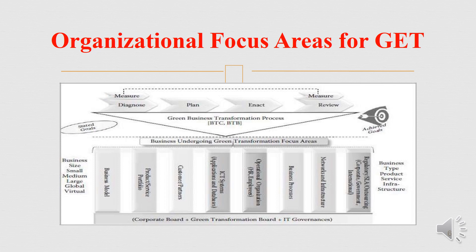Diagnose is step one — you will be measuring that. Then Plan is step two — you will also be measuring Enact. If the Enact is not up to the mark, you have to go back, then measure the Plan and Diagnosis, and execute those phases. Finally, you have to review whether you achieve the goals or not. If the achieved goals are not up to the mark, you iterate the process.